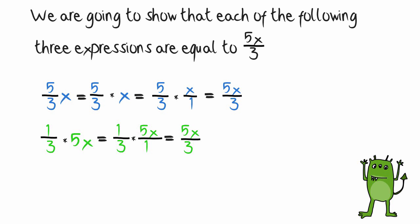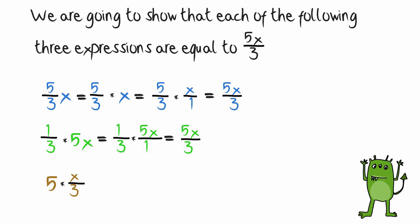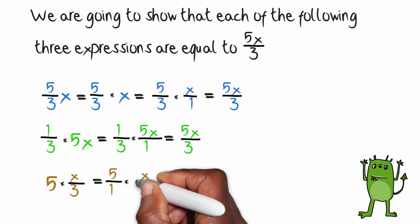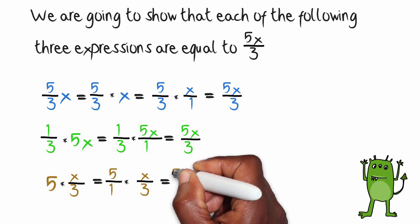Third candidate up, I have 5 times x over 3. We have a whole number multiplied by a fraction. What are we going to do? Turn that whole number into a fraction by making the denominator 1, and I can now multiply my two fractions. The numerator times the numerator, 5 times x is 5x.